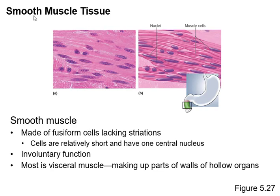The third kind of muscle is a little bit harder to identify. You see the fibers and the nuclei amongst the fibers, but you don't see any stripes. So we call it smooth muscle — it is not striated.